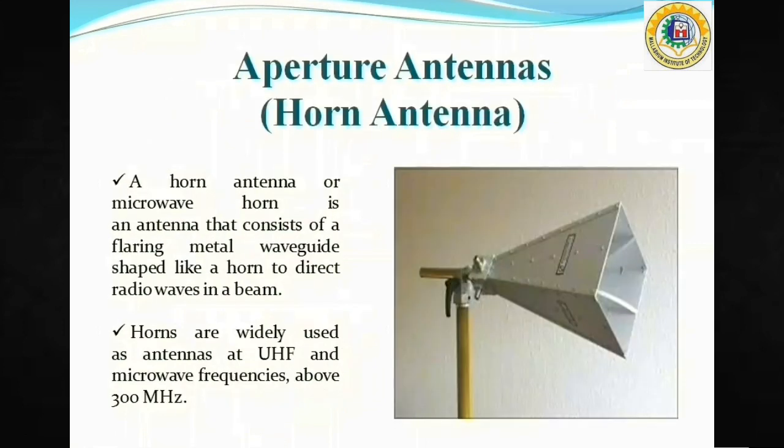Now, coming to another aperture antenna, that is the Horn Antenna. A horn antenna, or a microwave horn, is an antenna that consists of a flaring metal waveguide shaped like a horn to direct radio waves in a directional pattern. These antennas are basically used at UHF, or Ultra High Frequency range.